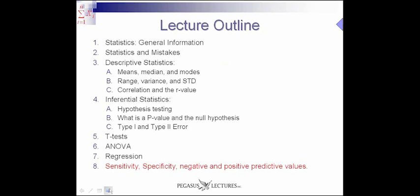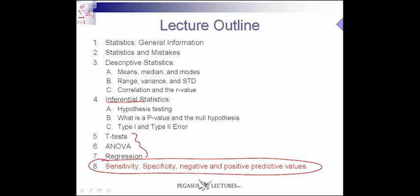So, in terms of lecture outline, this first module is on general information of statistics, and the second module will be statistics and mistakes, so the biggest mistakes commonly made in statistics. Then, descriptive statistics, which includes means, medians, and modes, range, variance, and standard deviation, correlation, and error value. Then, we're moving on to inferential statistics, and that will cover hypothesis testing, the meaning of a p-value and the null hypothesis, type 1 and type 2 error. Now, although these next parts here are actually part of inferential statistics, they will stand on their own as modules, so that will give you the ability to go further in depth in each one individually. And this last section right here, highlighted in red, will not be in the same format. They'll be included in what's in the e-course format I've recorded previously, and those are available online for a small fee. The ideas of sensitivity, specificity, negative and positive predictive values, and accuracy.